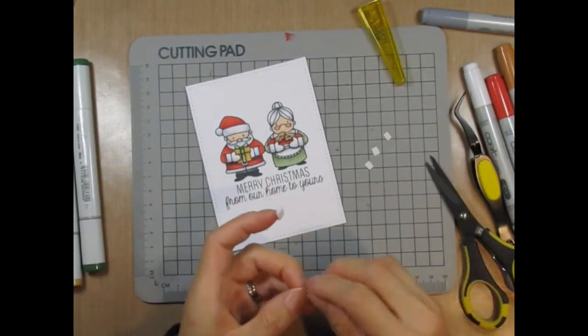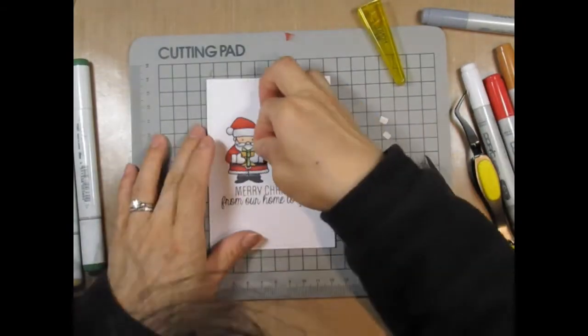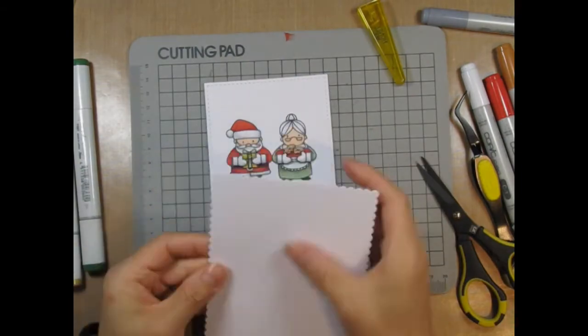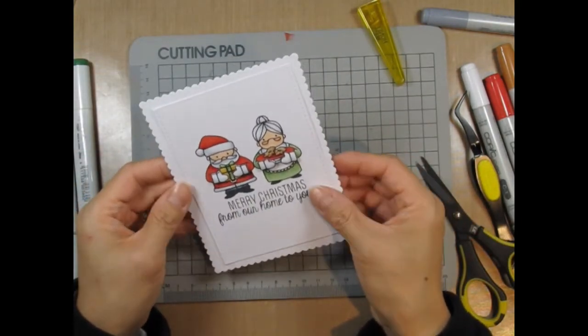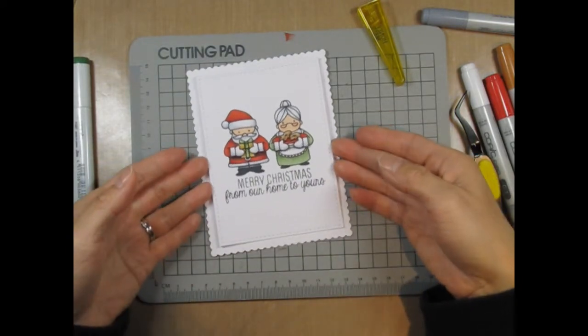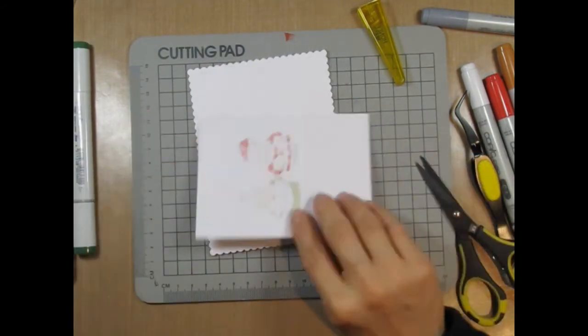Kind of lost that last mitten there. So now that is done, I can place this panel onto the card base. I just have to decide whether I want it flat or raised with foam tape. And I've decided I want it raised.